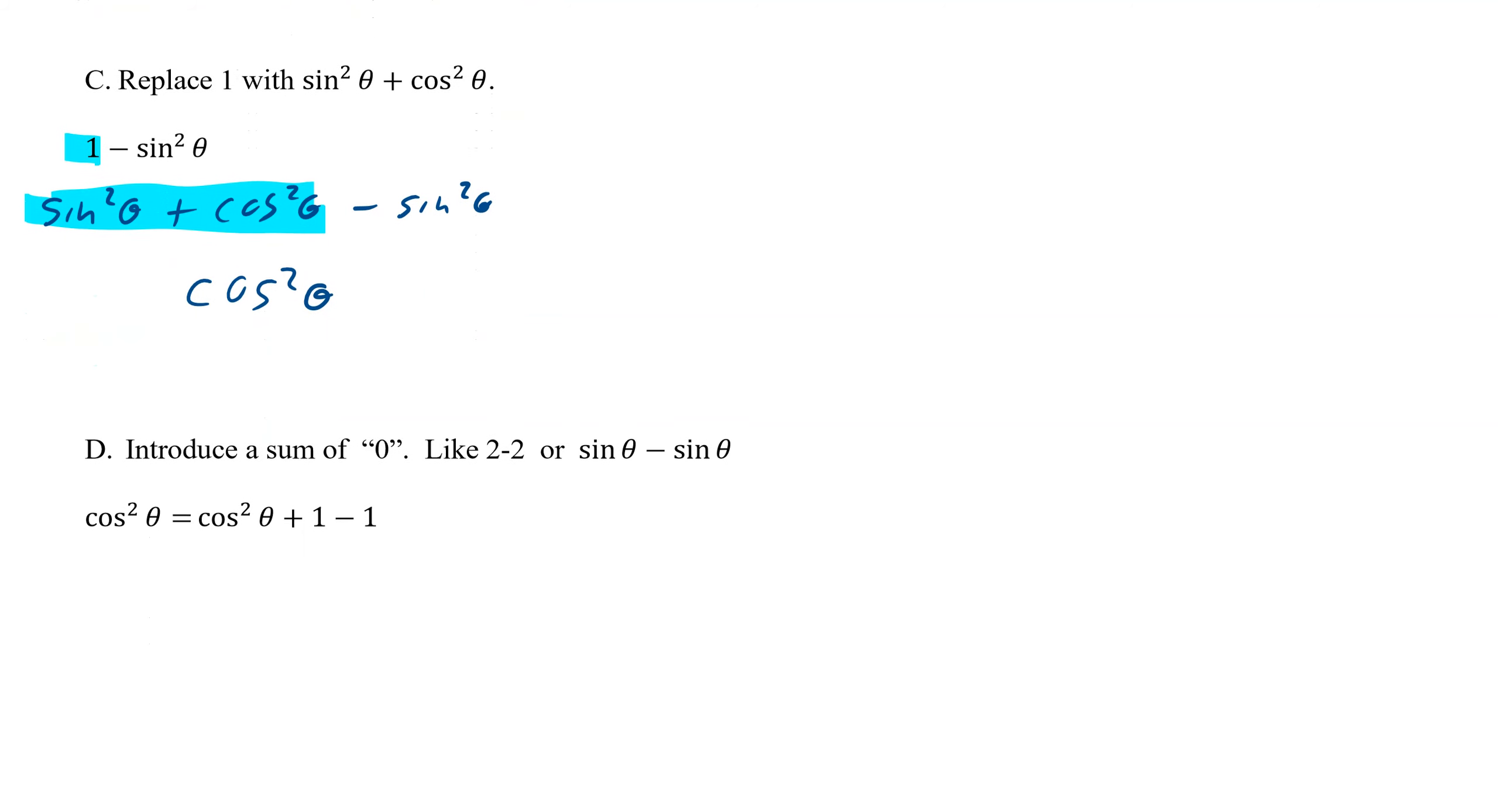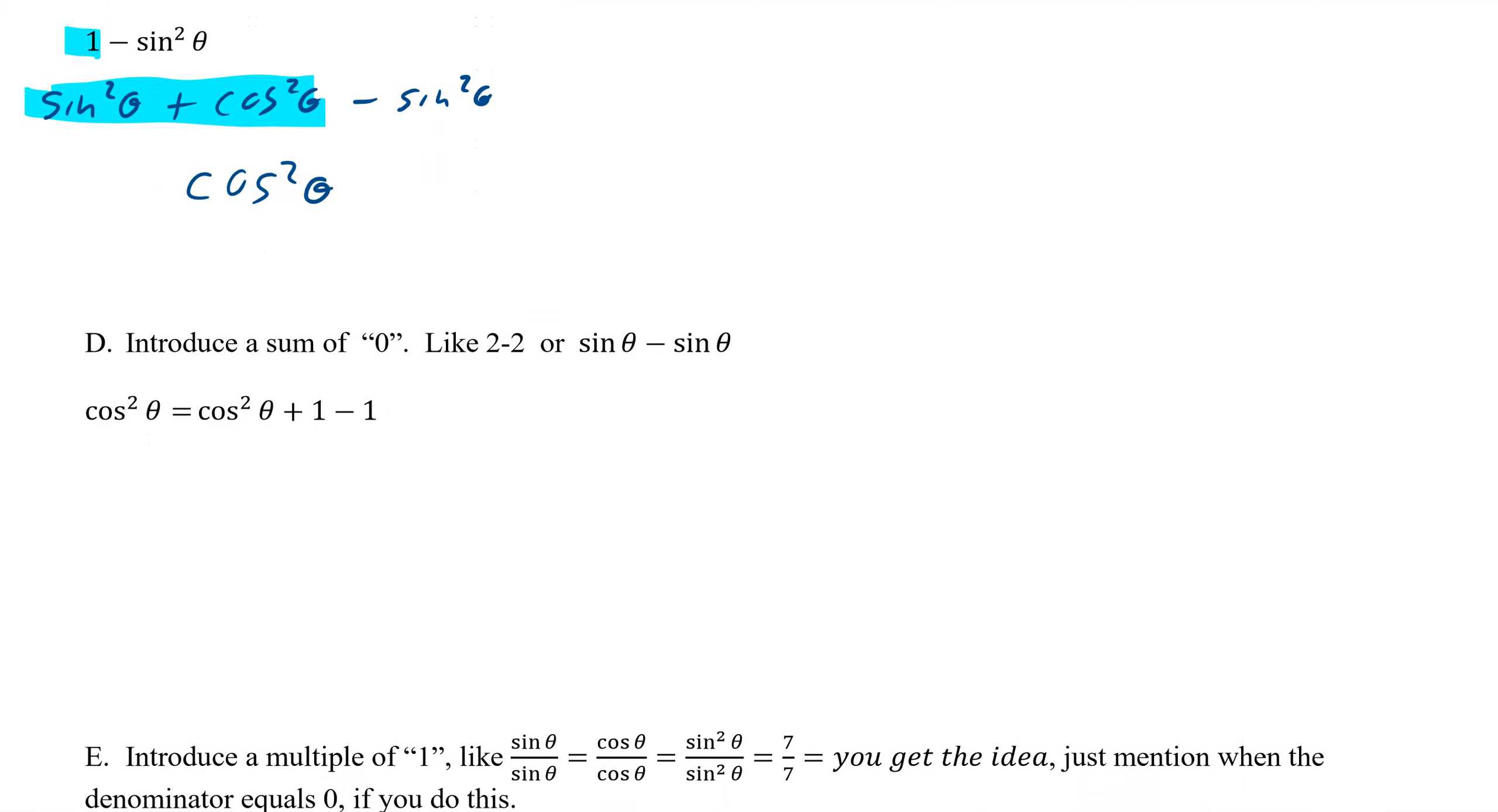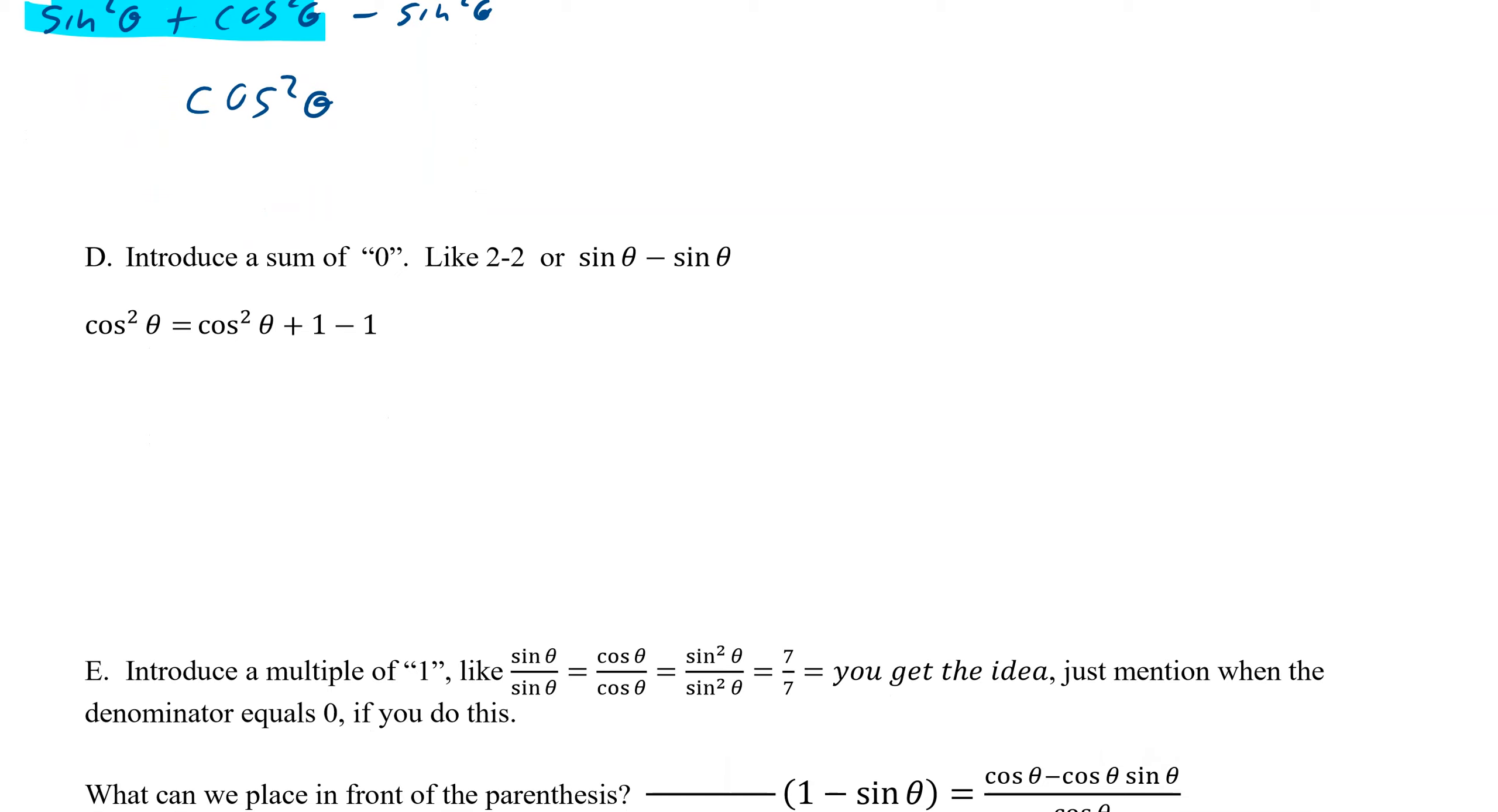The other one is to introduce a 0. This is a very tricky one, but it's not really tricky, it's just the basic idea. Like if you have 2 take away 2, that is the same as 0. So you can replace 0 with 2 minus 2. You can also introduce a sine theta as long as you introduce a negative sine theta because that is 0.